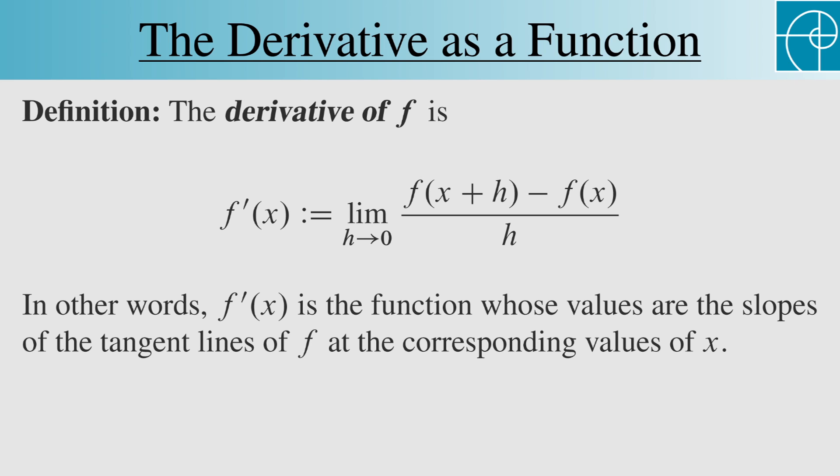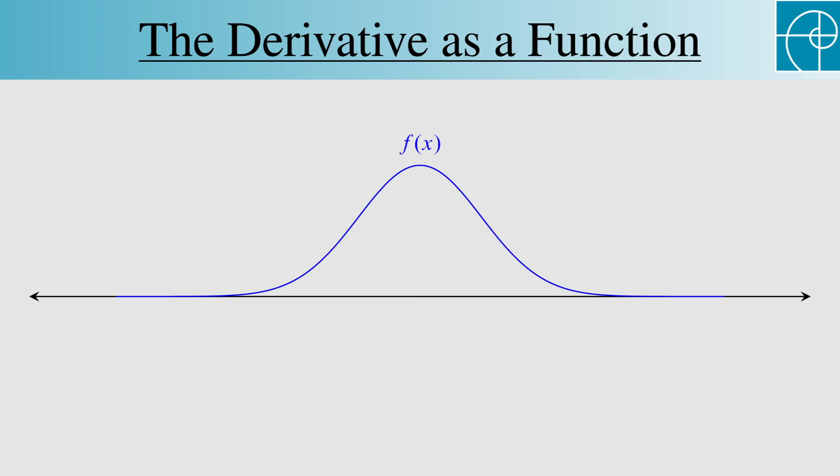Let's look at an example. Here we have the graph of a function. As we move along the graph from the left to the right, the function is increasing until we reach this point, where the tangent line is horizontal, and then the function is decreasing.